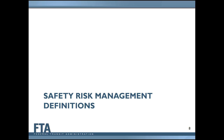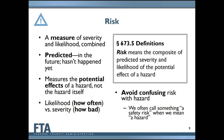We'd like to take a moment to ensure we're all using the same terminology. The first term to review is risk. In the PTASP regulation, in Part 673, risk is defined as the composite of predicted severity — how bad — and likelihood — how often — of the potential effect of a hazard. When we think of risk as defined by Part 673, we're thinking about it as a unit of measure: a combination of severity and likelihood.